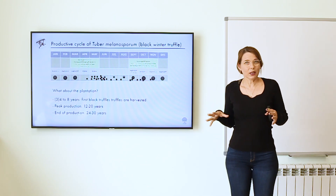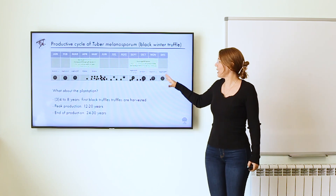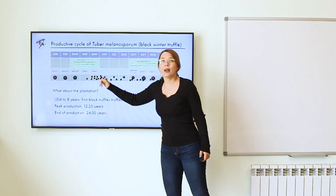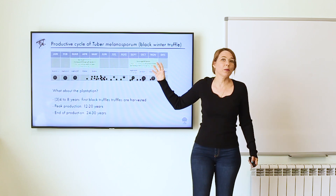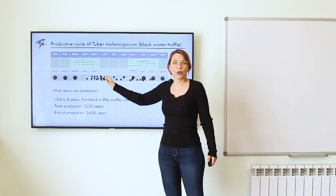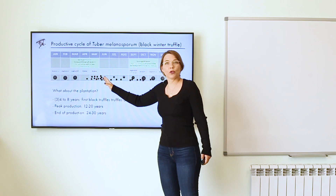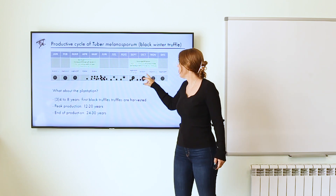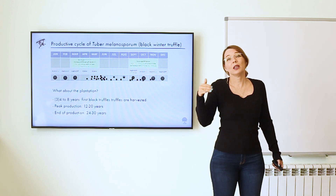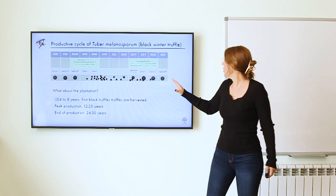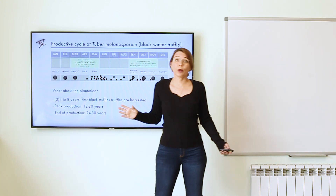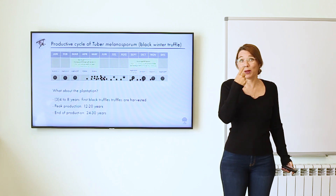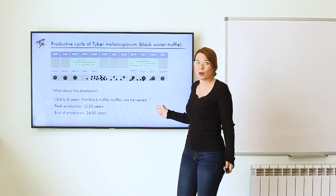Now, focusing on Tuber melanosporum — the annual calendar. New truffles form at the beginning to middle of May — middle spring. They stay in the ground and grow slowly until after the summer heat, when autumn begins and the first growth stage occurs. They stay in the ground until, for reasons we don't fully understand, they develop a smell because they're ripe and ready to be eaten by animals. That's when we harvest them with dogs.